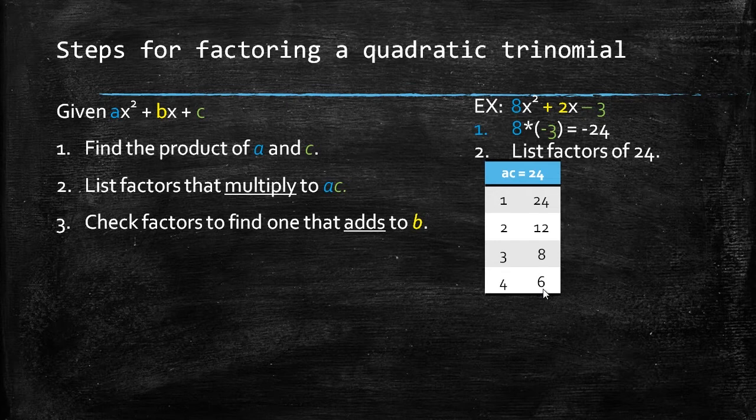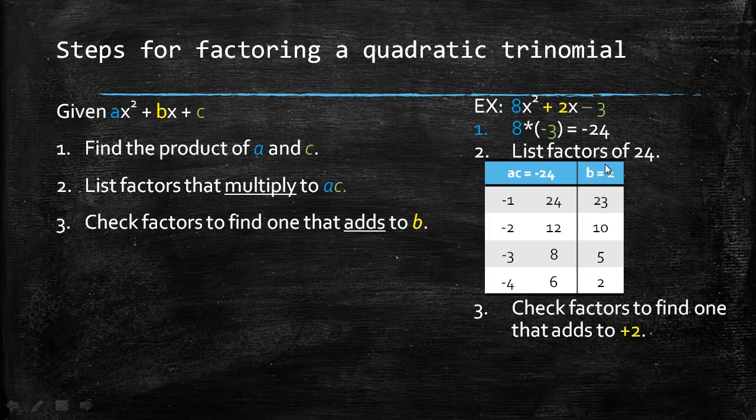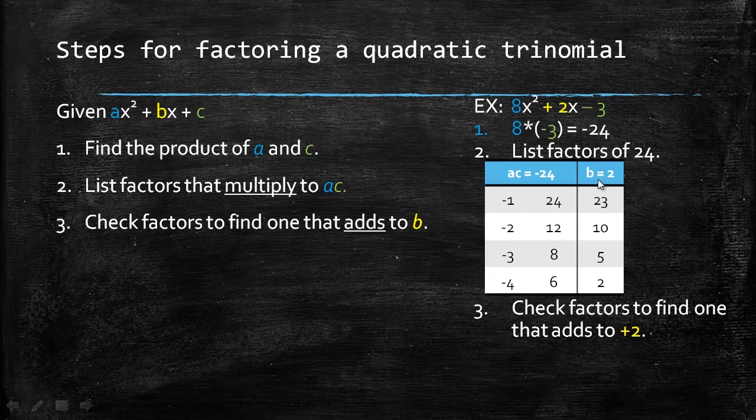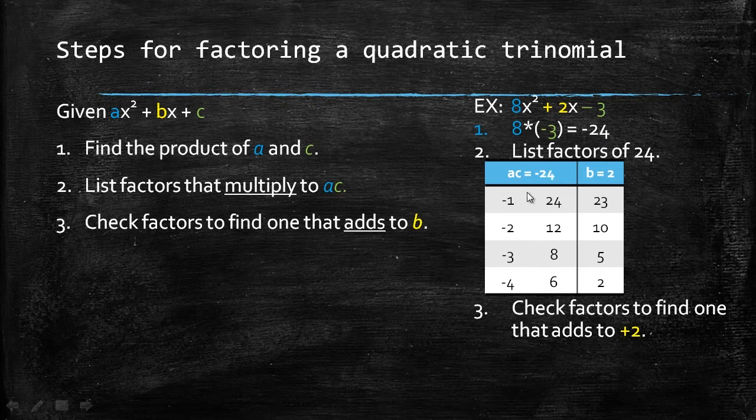Step 3 is to check factors to find one that adds to b. In our example, b is positive 2. So I want to find two numbers that add to positive 2. And I'm also going to check because I want my product to equal negative 24, not positive 24.